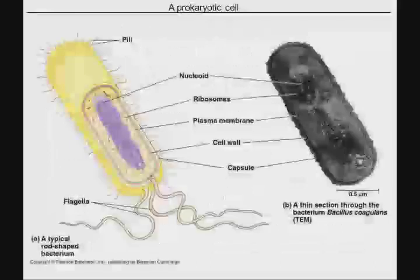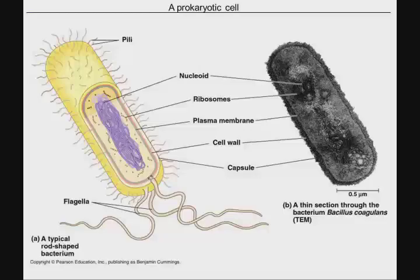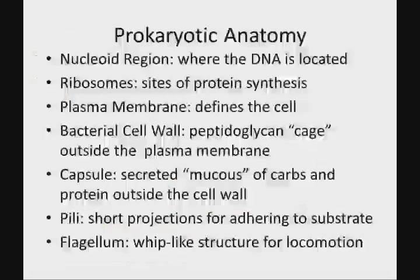Some prokaryotic cells also have flagella — whip-like structures for locomotion. The pili and flagella tend to be optional, depending on the species — like a sunroof on a car, you don't need it to function. So you should be familiar with a prokaryotic cell and its anatomy. What we're going to do next is talk about the eukaryotic cell and spend a lot more time on that, because that's the kind of cell that makes up you.